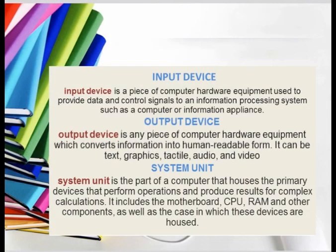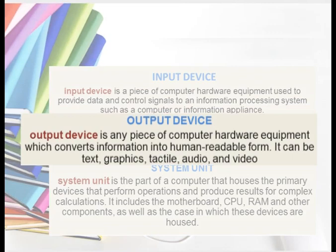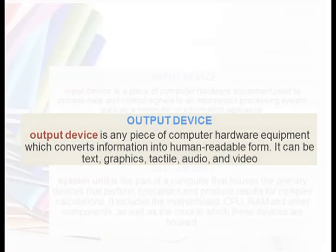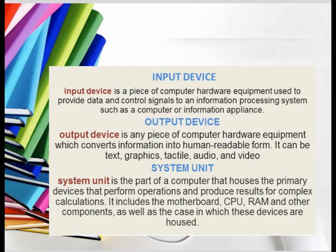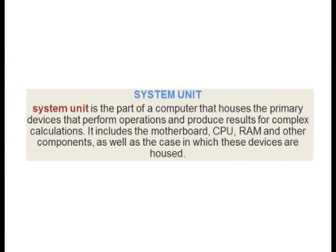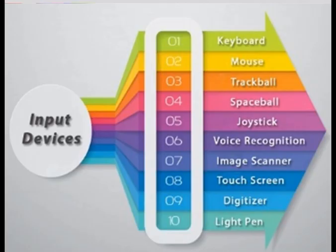An output device is a piece of computer hardware equipment which converts information into human-readable form — it can be text, graphics, tactile, audio, or video. The system unit is the part of a computer that houses primarily the processing devices. Input devices include keyboard, mouse,